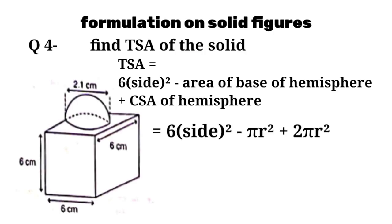TSA of solid equals TSA of cube minus area of the base of hemisphere plus CSA of hemisphere equals 6 side² minus πr² plus 2πr².